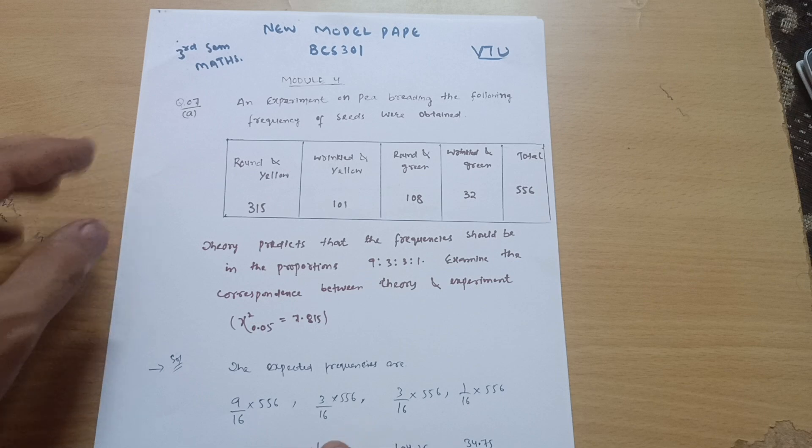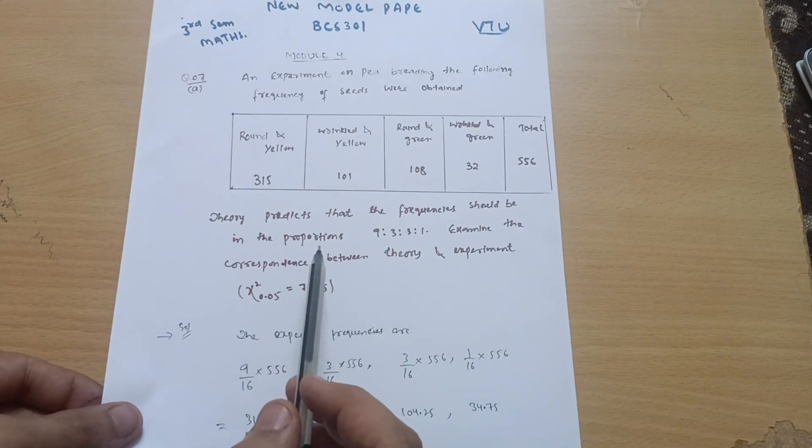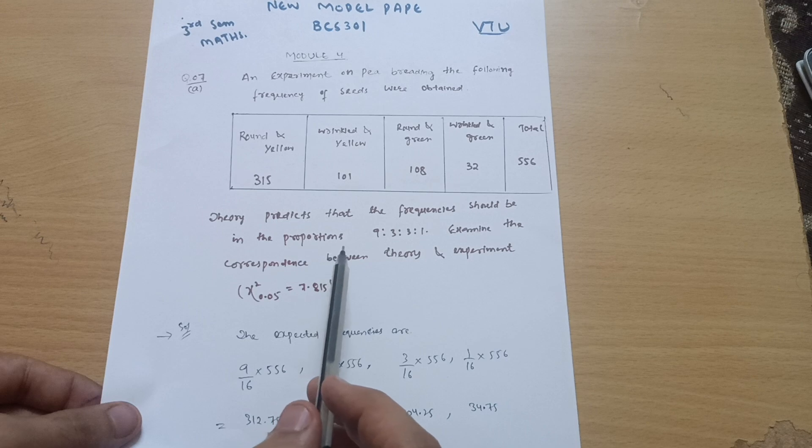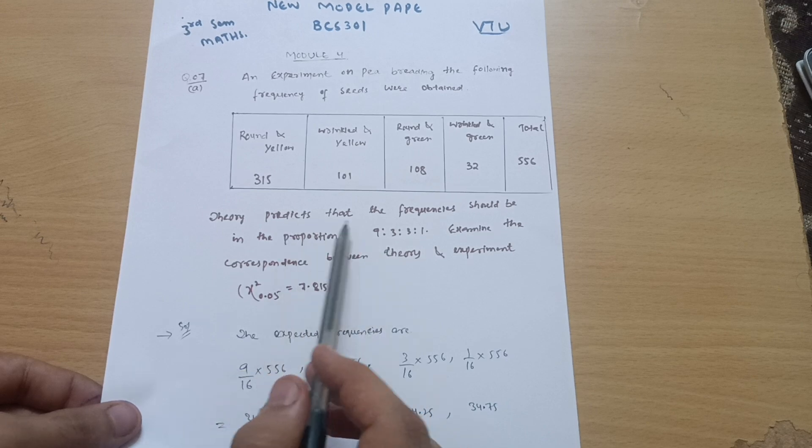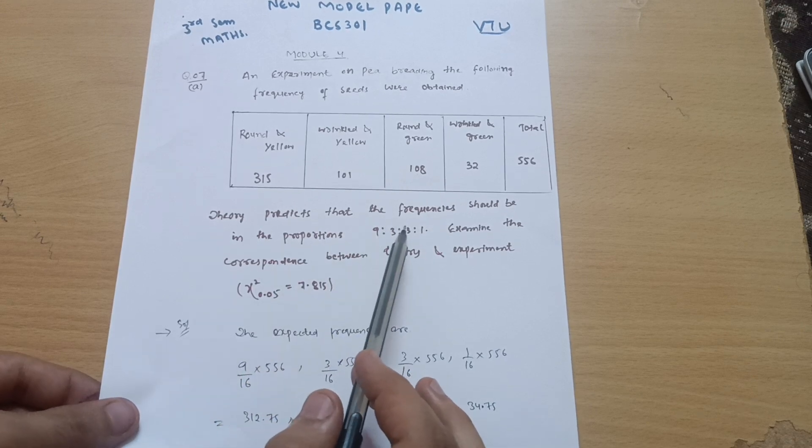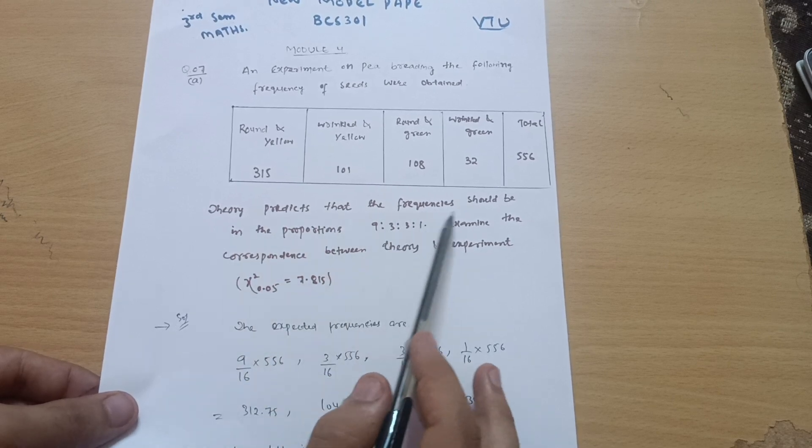See here, we were calculating in chi-square distribution the expected values, but here expected values are not given. He has indirectly given the proportions.